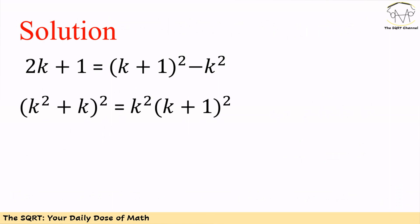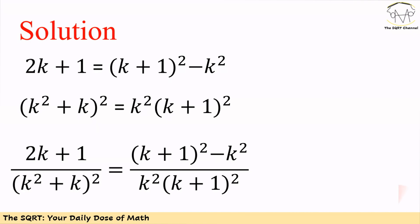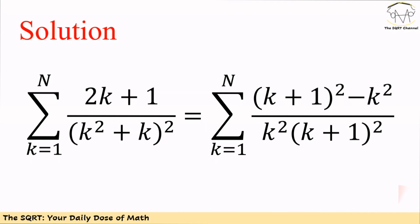To solve this problem, we are going to start with some simplifications. First, we know 2k+1 can be written as (k+1)² minus k². We also see k²(k+1)² can be simplified as k² times (k+1)². With these two, we can write (2k+1) divided by k²(k+1)² as (k+1)² minus k² divided by k² times (k+1)². Based on what we have, we can write the equation as sigma of (k+1)² minus k² divided by k² times (k+1)².